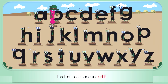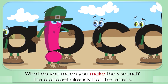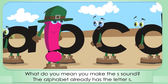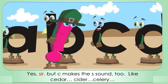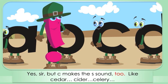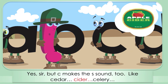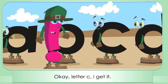Letter C, sound off, sir. I'm the letter C. I'm a consonant. I make the S sound. What do you mean you make the S sound? The alphabet already has the letter S. S can make its own sound. Yes sir, but C makes the S sound too, like cedar, cider, celery. Okay, letter C, I get it.